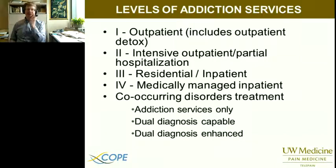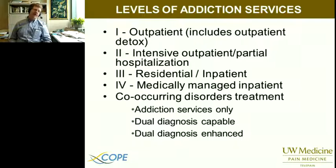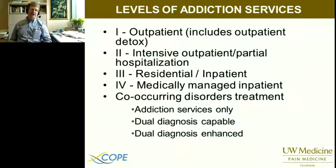Alongside these levels of addiction services are co-occurring disorder treatments. Any of those levels one through four can be either addiction services only, or what they call dual diagnosis capable — meaning they have some ability to deal with mental health problems — or dual diagnosis enhanced, for people who have severe mental illness as well as addiction. So if you know that someone needs outpatient treatment, what else do they need? If it is a co-occurring disorder, you'd be looking for programs that have more dual diagnosis services available. That's the overview of what addiction treatment programs look like; pretty much all programs will fit somewhere in this continuum.